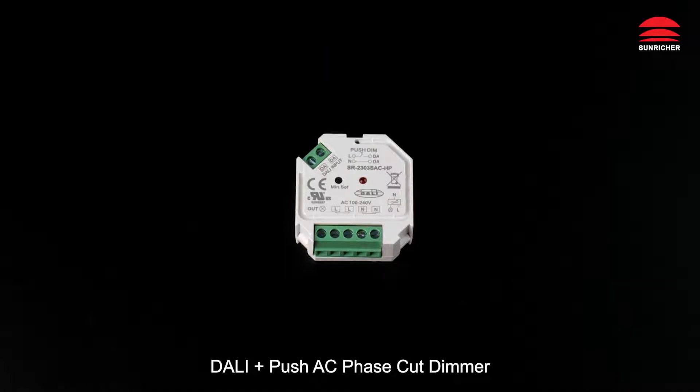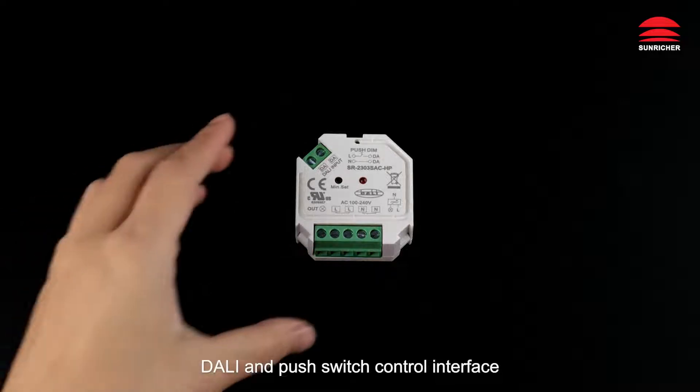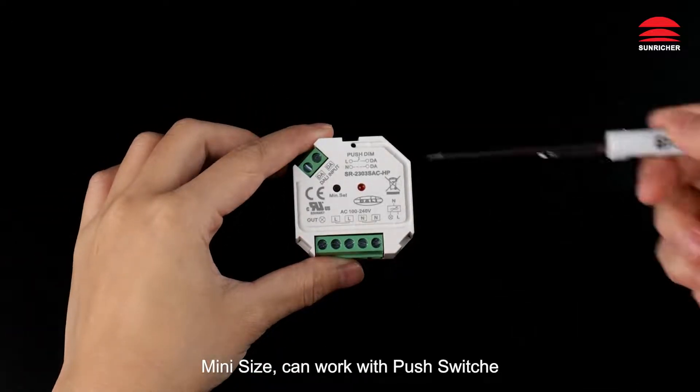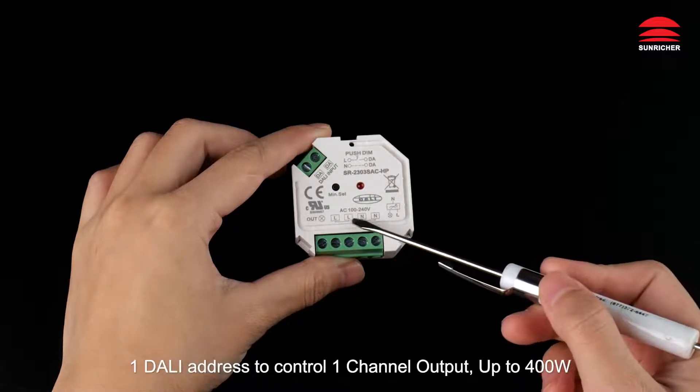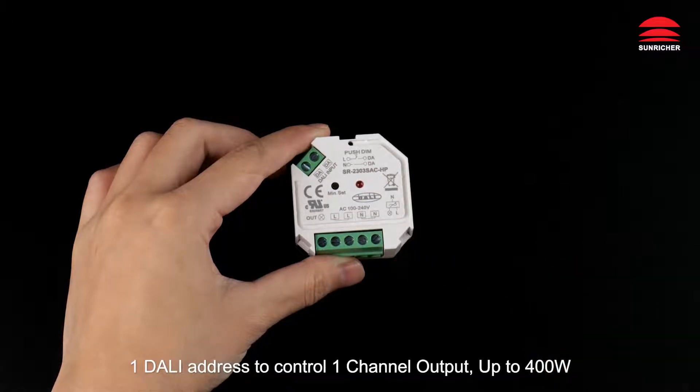DALI plus push AC phase cut dimmer with both DALI and push switch control interface. Mini size, can work with push switch, innovative minimum brightness setting function. One DALI address to control one channel output, up to 400 watts.